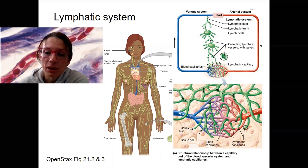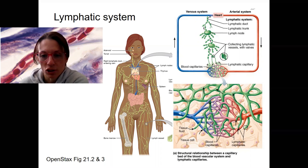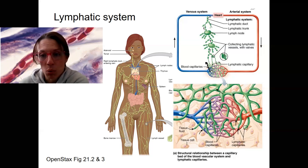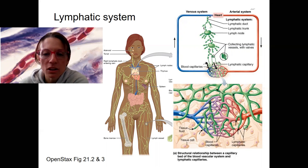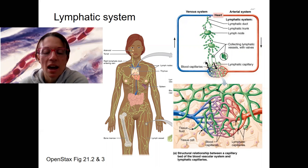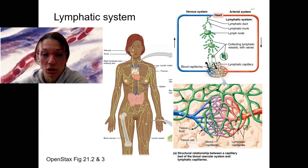The lymphatic system came up in the last video. We talked about how at the capillaries, all throughout circulation, filtration occurs at slightly higher rates and quantity than reabsorption. So basically we have, as part of that microcirculation of the capillaries, excess fluid leaving the blood circulation.